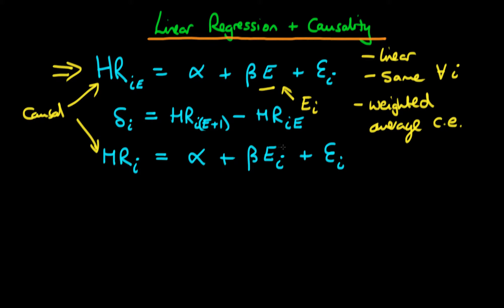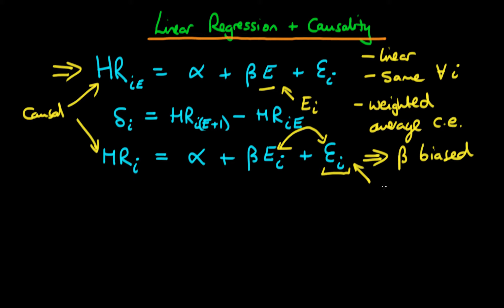The problem with this observed model is that the exercise level an individual chooses is not necessarily independent of all the other factors determining resting heart rate. There is likely correlation between E_I and epsilon_I. Because of that, if we estimate this model directly, beta would be a biased estimate of the causal effect. Epsilon_I contains all factors affecting potential heart rate, and those generally won't be orthogonal to E_I.